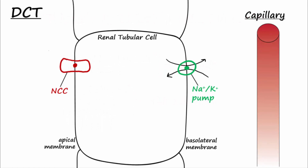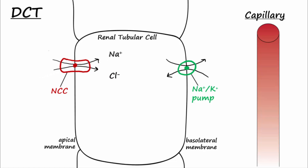A portion of the sodium filtered in the glomerulus gets reabsorbed in the DCT. The sodium crosses the apical membrane by way of sodium chloride symporters, or NCCs, and then by way of sodium-potassium pumps to be reabsorbed back into the blood. The diuretic action of thiazides centers around the inhibition of these sodium chloride symporters.